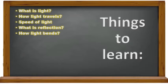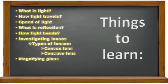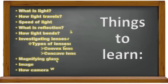We know that light travels the fastest in the world. We also learnt about reflection. Today we are going to learn about how light bends. Afterwards, we will investigate lenses, learning about two types: convex lens and concave lens. After that, we will learn about the magnifying glass image and finally how a camera works.